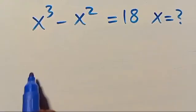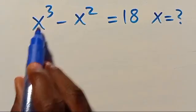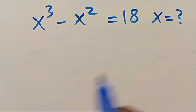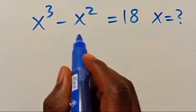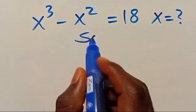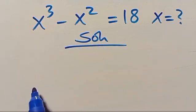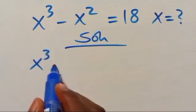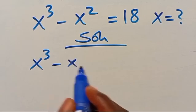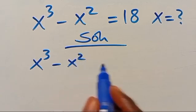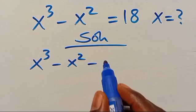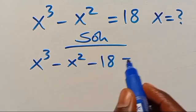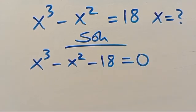What is the value of x? It means that you have x to the power of 3 minus x squared equals 18. Let's find the solution from here. So when we have x to the power of 3 minus x squared, let's take this 18 to the other side — it will be minus 18. Then we have everything equal to zero.